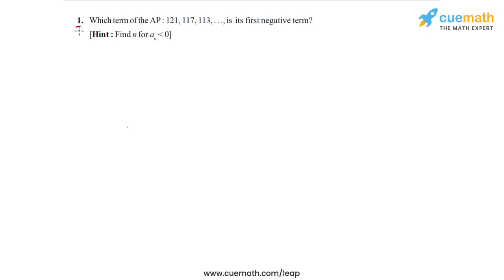The problem statement in question 1 of this exercise is as follows: Which term of the arithmetic progression 121, 117, 113, and so on, is its first negative term?